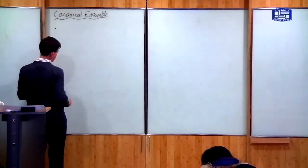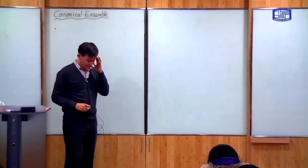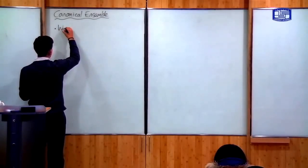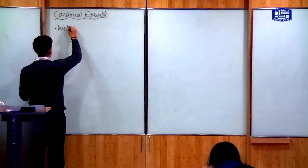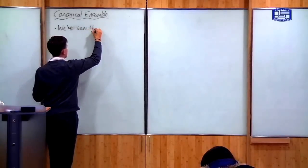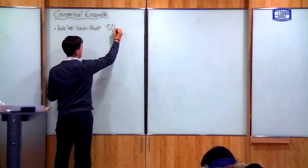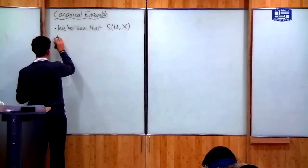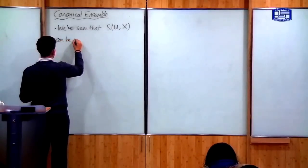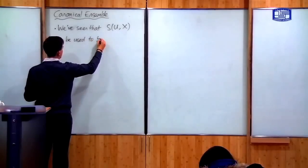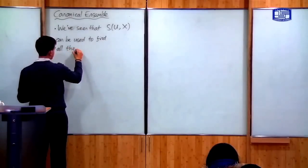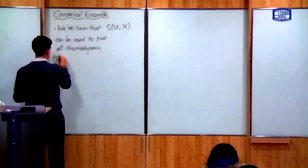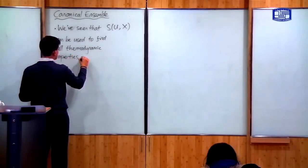The reason this is useful: we've seen that if you can find the entropy of a system, then you can find all of the other thermodynamic properties. The entropy function, which depends upon U and some other properties X, can be used to find all thermodynamic properties of a system.